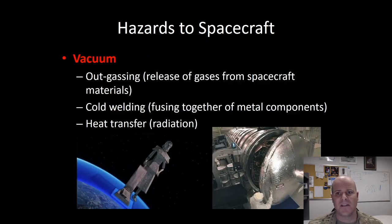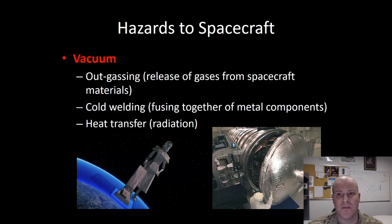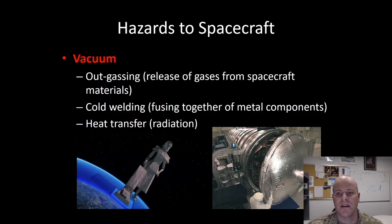Our next hazard is that of vacuum. The vacuum of space will cause outgassing for our satellite. The ambient pressure in space is nearly a perfect vacuum, and this greatly reduced atmospheric pressure causes some materials to release trapped gases. For this reason, we often bake our satellites in thermal vacuum chambers prior to flight to mitigate the inevitable outgassing in space.